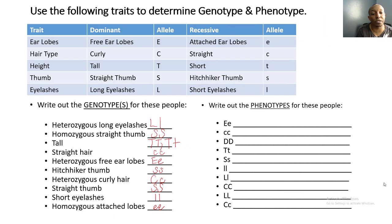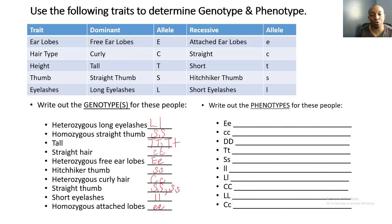Let's see how you did on the next seven. Straight hair is recessive, so you'd write two lowercase c's. Heterozygous free earlobes: capital E and lowercase e. Hitchhiker thumb is recessive: two lowercase s's. Heterozygous curly hair: capital C and lowercase c. Straight thumb can be shown as two capital S's or a capital S and lowercase s. Short eyelashes is recessive: two lowercase l's. And homozygous attached lobes — recessive — gives you two lowercase e's.